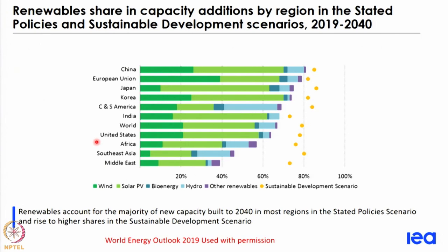In the stated policy scenario, different countries will have different proportions of share in new capacity additions. In the Indian context, a significant amount of share comes from renewables — both wind, PV, and hydro — and more than 60 to 70 percent of new additions will all be renewables. Similar kinds of details are there for most other countries of the world. That is an interesting trend to keep in mind.